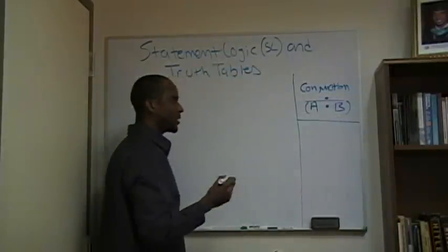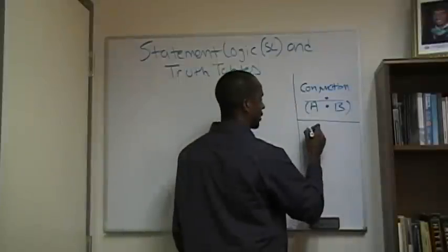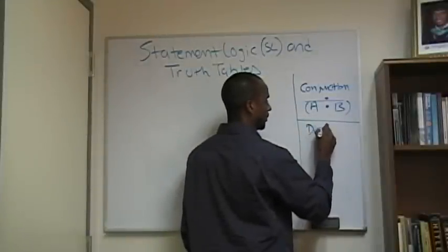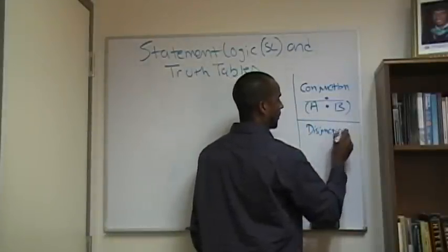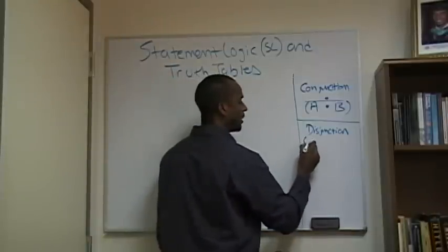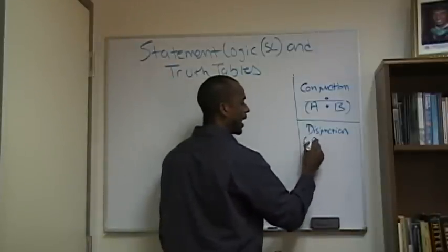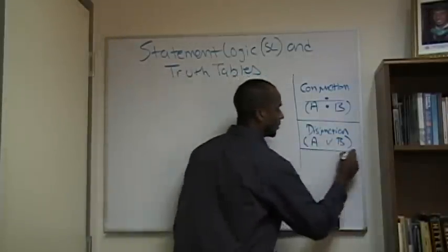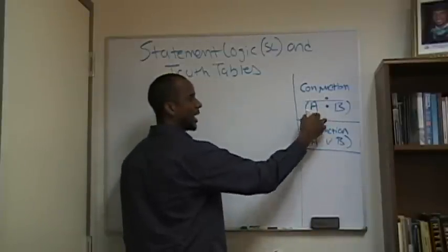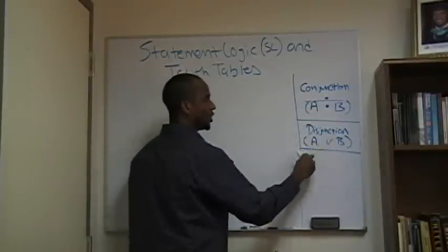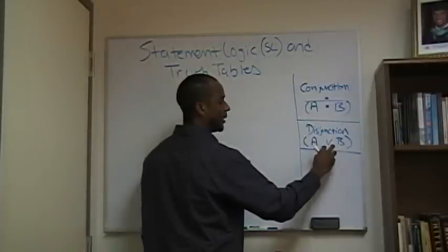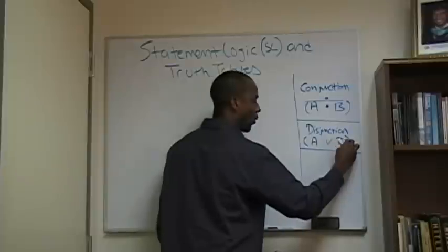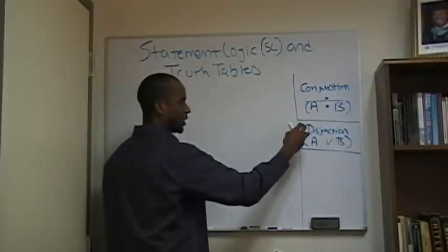Then the next thing you can talk about is a disjunction. A disjunction is represented by A or B. So the conjunction is the combination — A and B — while the disjunction represents the fact that either it's A or it's B. Conjunction, disjunction.